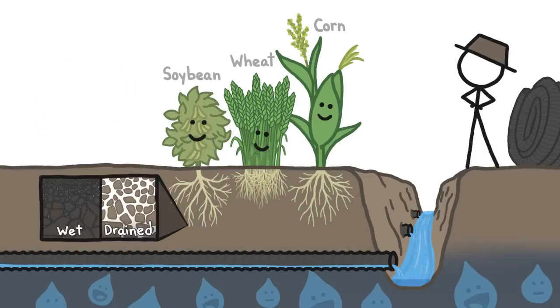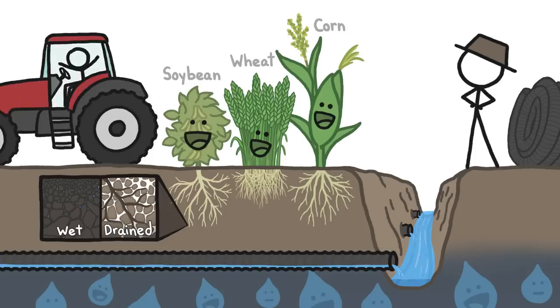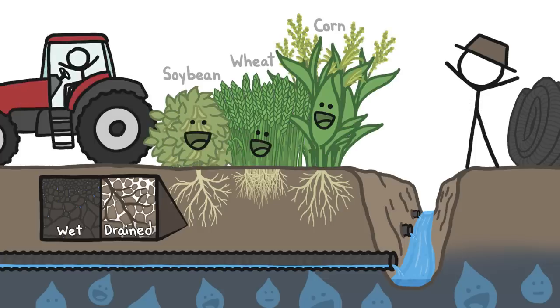As a result, the soil has enough space in it for roots to grow, and enough air for roots to breathe. Crops survive, tractors don't get stuck, and overall productivity increases.